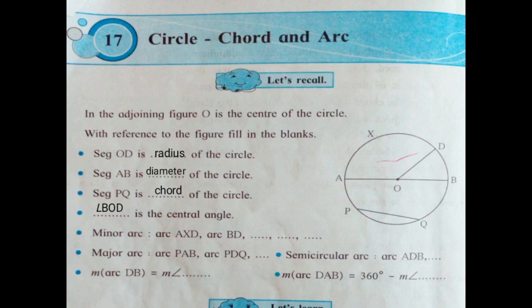You have to name any 3 minor arcs: arc BQ, arc QP, and arc AP.